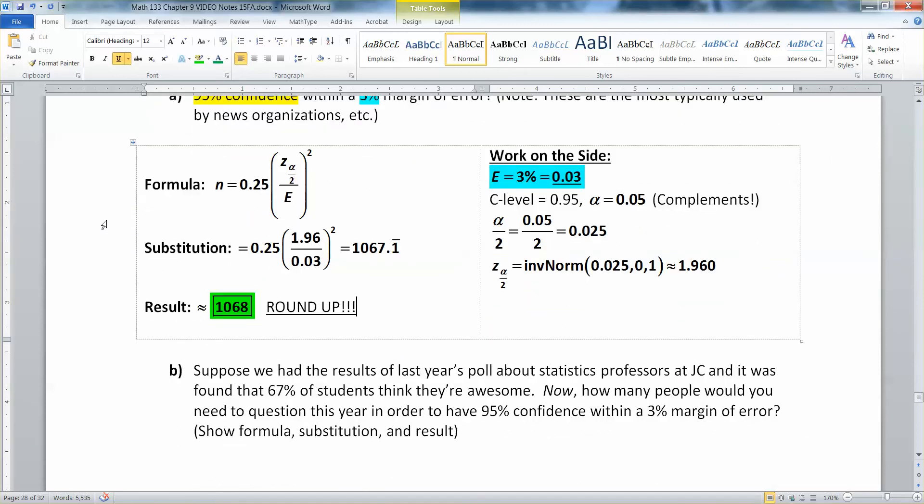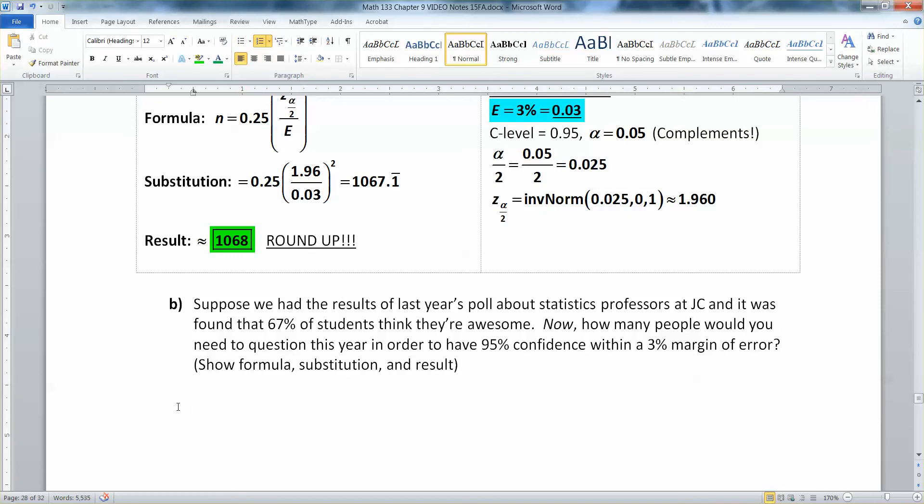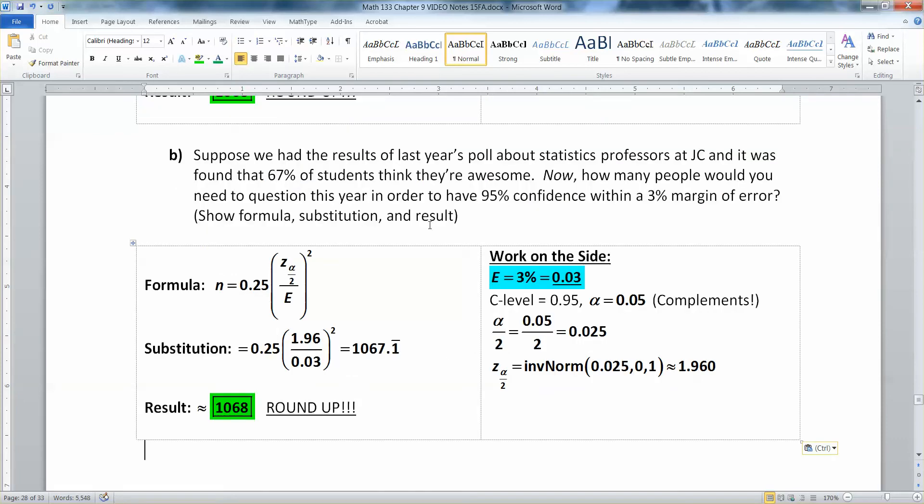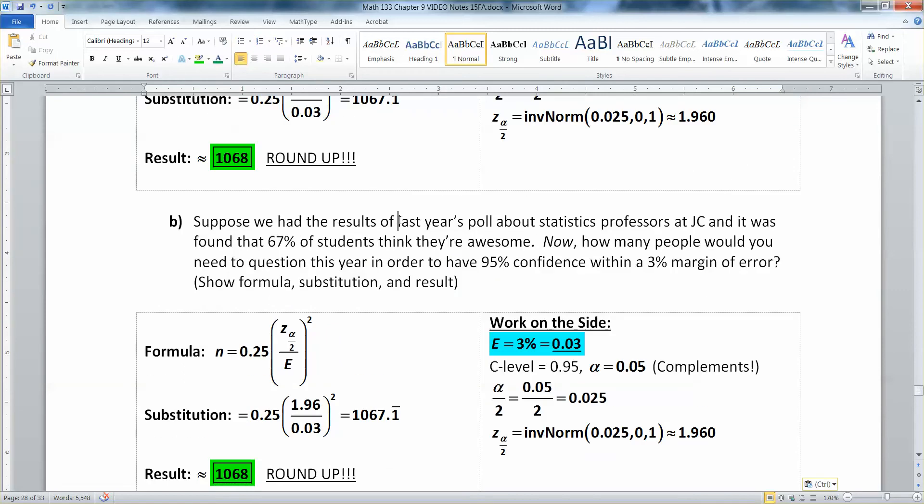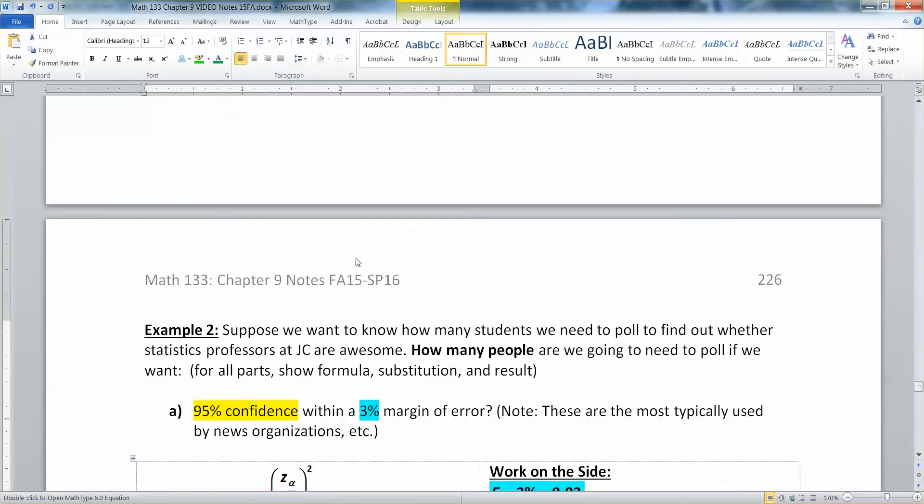Now here we have it. Suppose we did have last year's poll and we found that 67% of students think that stats professors at Jackson College are awesome. Now how many people would you need to question this year in order to be 95% confidence with a 3% margin of error? Well, all of this stuff is still the same. It's 95% confidence, 3% margin of error. None of it's changed. You still have a z-score of 1.96. You still have an error of 0.03.